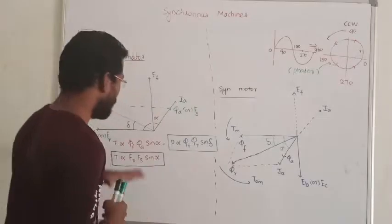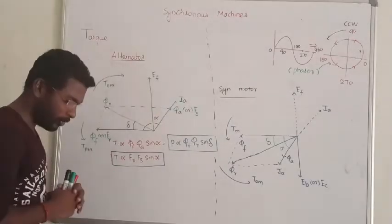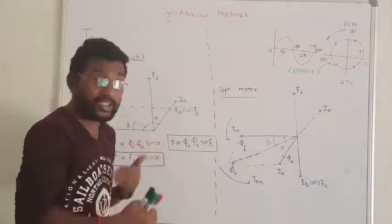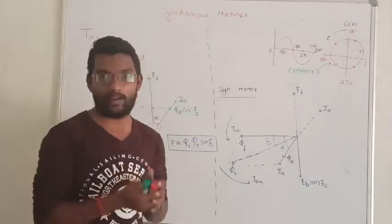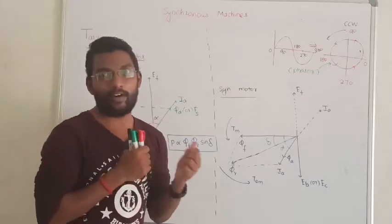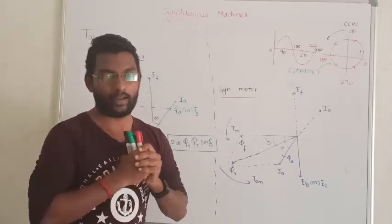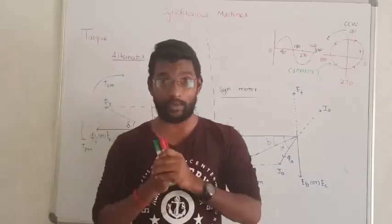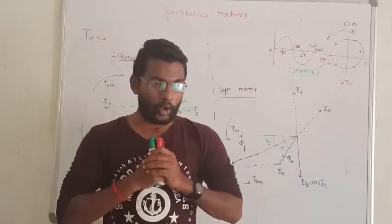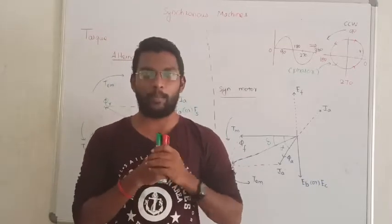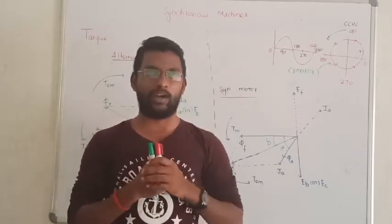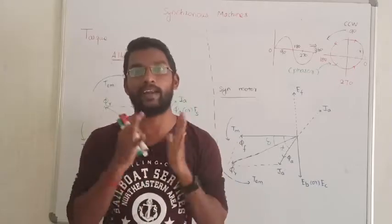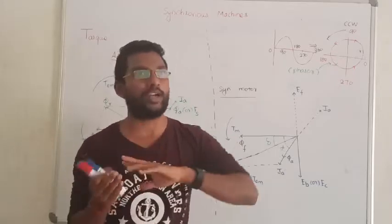So when we go to the next lecture, the synchronous machine is going to be developed in the same direction. The motor motion is going to be set. When we call it in the same direction over time, what is the difference?